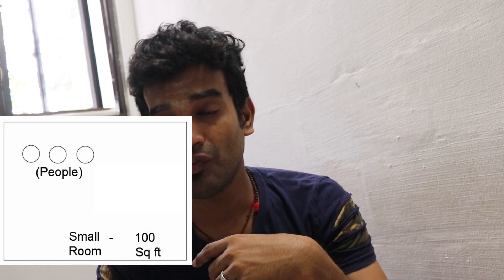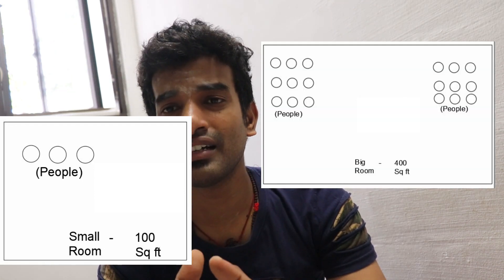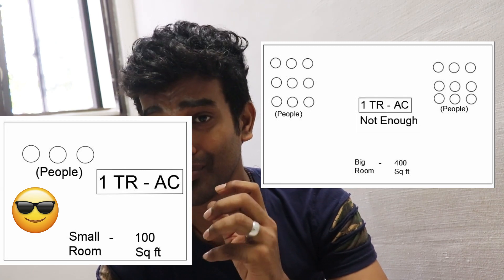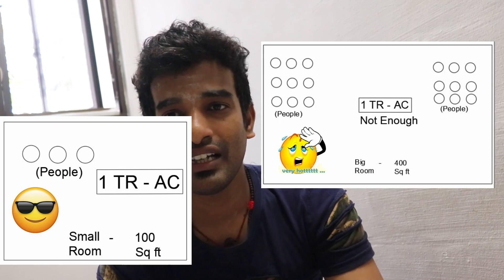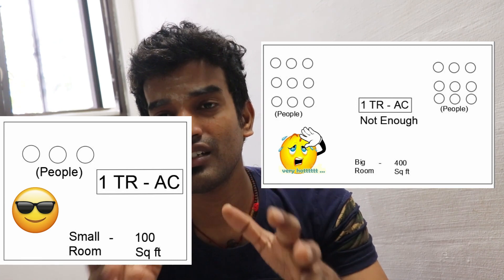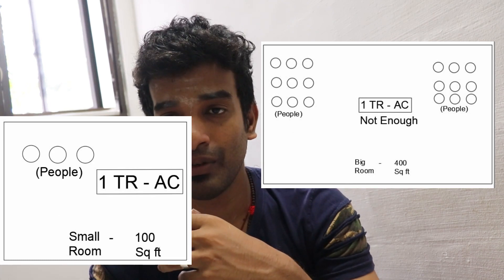Now, what is the role of a design engineer? A design engineer has to calculate the basic design — for example, how to size equipment. It is simple. If you have a small room of 10 by 10, that is 100 square feet. You take a 1-ton capacity unit. A smaller room needs less cooling, so for around 400 square feet you can use a 2-ton unit.